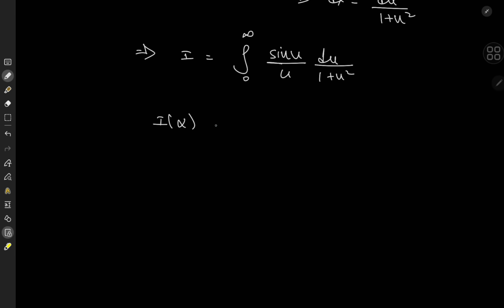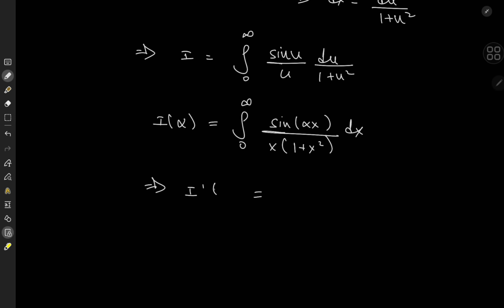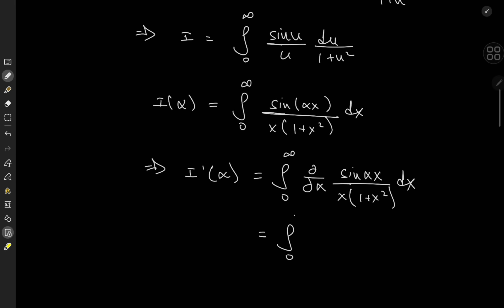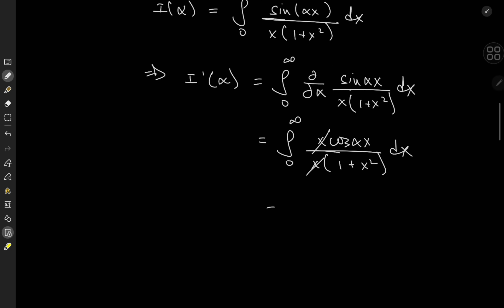I'm going to define the integral function I of some parameter alpha as the integral from 0 to infinity of sine of alpha x over x times 1 plus x squared dx, replacing the dummy variable u by x. The rationale is that if I differentiate sine of alpha x with respect to alpha, I'll get an x term outside which cancels with the x in the denominator. So I prime of alpha equals the integral from 0 to infinity of cosine alpha x over 1 plus x squared dx — the x terms cancel out, leaving a familiar-looking integral.